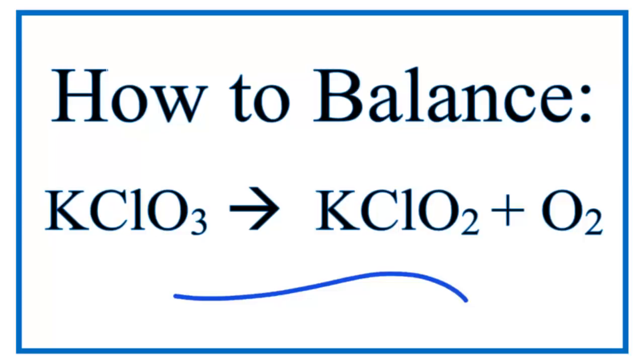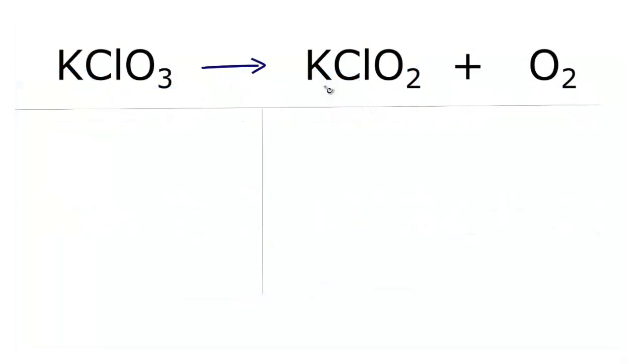To balance this equation, KClO3 yields KClO2 plus O2, let's first count up the atoms on each side of the equation.